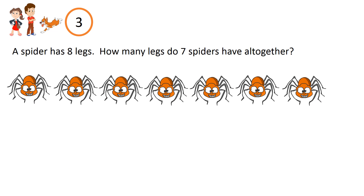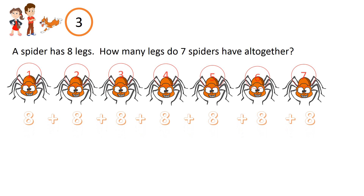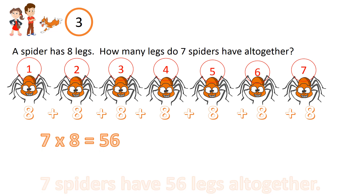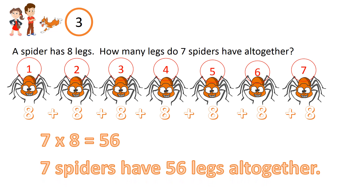Question 3. A Spider has eight Legs. How many Legs do seven Spiders have all together? Seven groups of eight. Seven times eight equals fifty-six. Seven Spiders have fifty-six Legs all together.